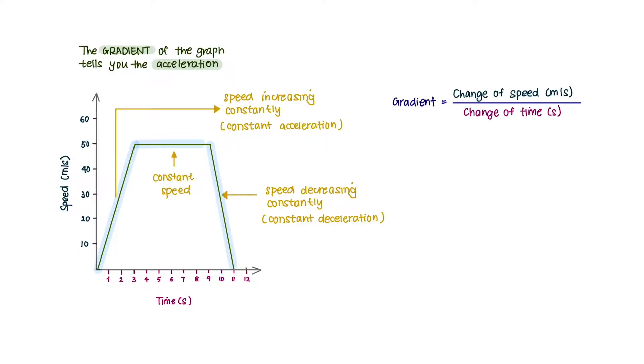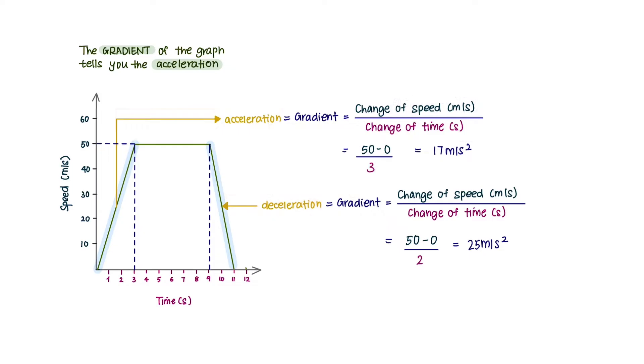Since the gradient is the change of speed over change of time, which is the formula for acceleration, we can calculate the acceleration for each section by calculating the gradient.